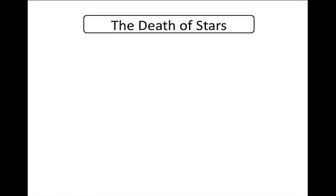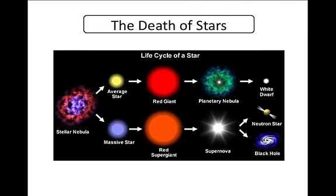The death of stars. Once a star turns into a red giant, it can either form into a planetary nebula, which becomes a white dwarf, or the red giant can form into a supernova, which becomes a neutron star.